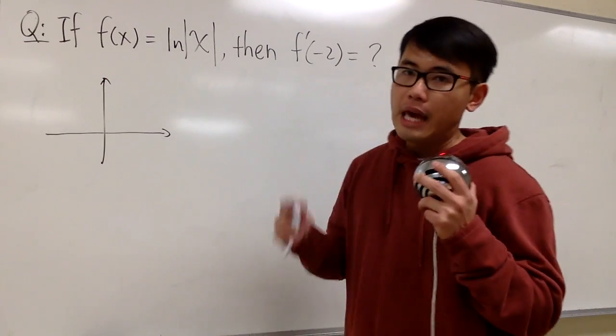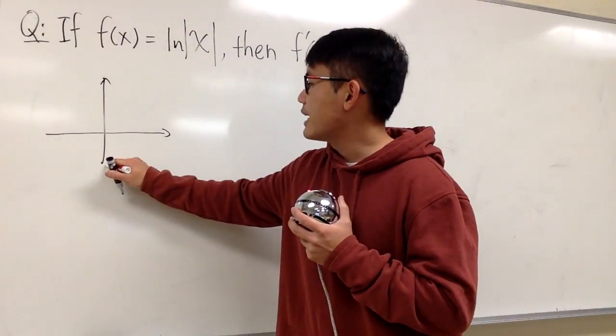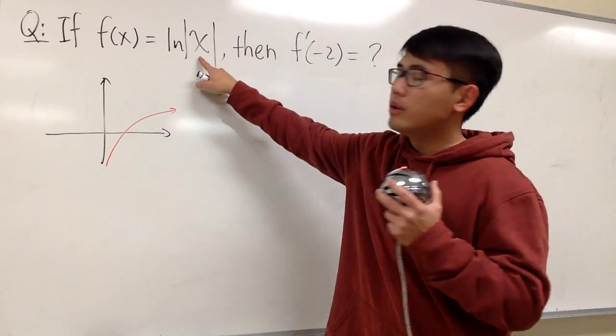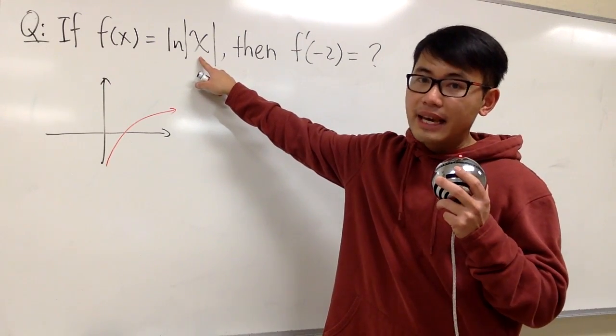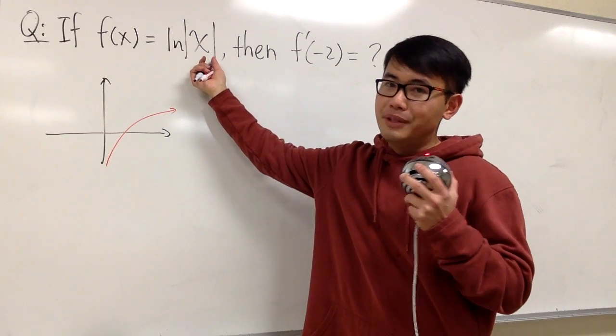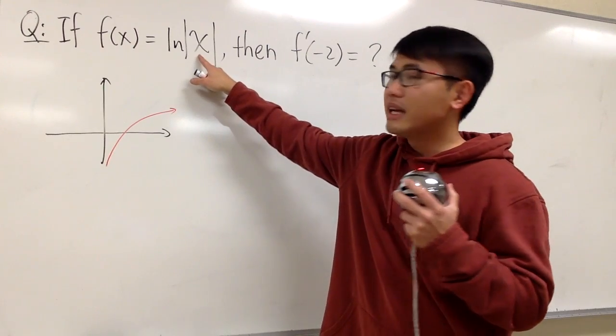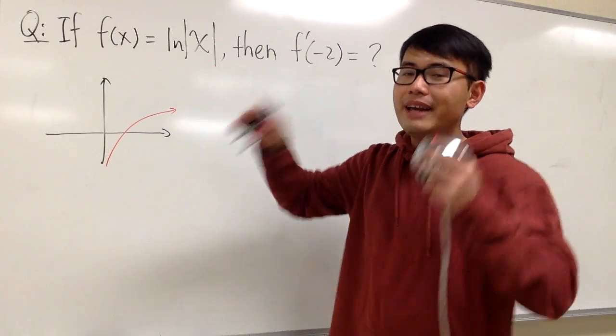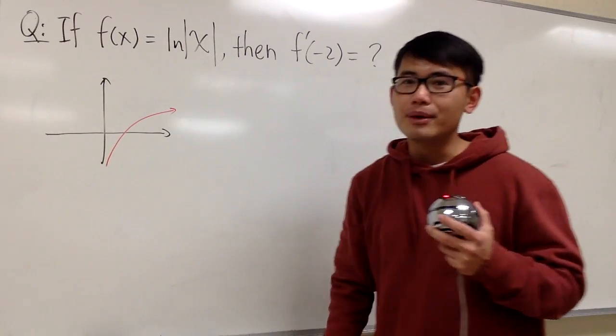Normally, for the ln x, we'll just have this side right here, right? However, you see, we have the absolute value with the x. In this case, x can actually be a negative number. Because you can plug in negative 5, negative 2, negative 10 in here. And the absolute value will make that negative number positive.